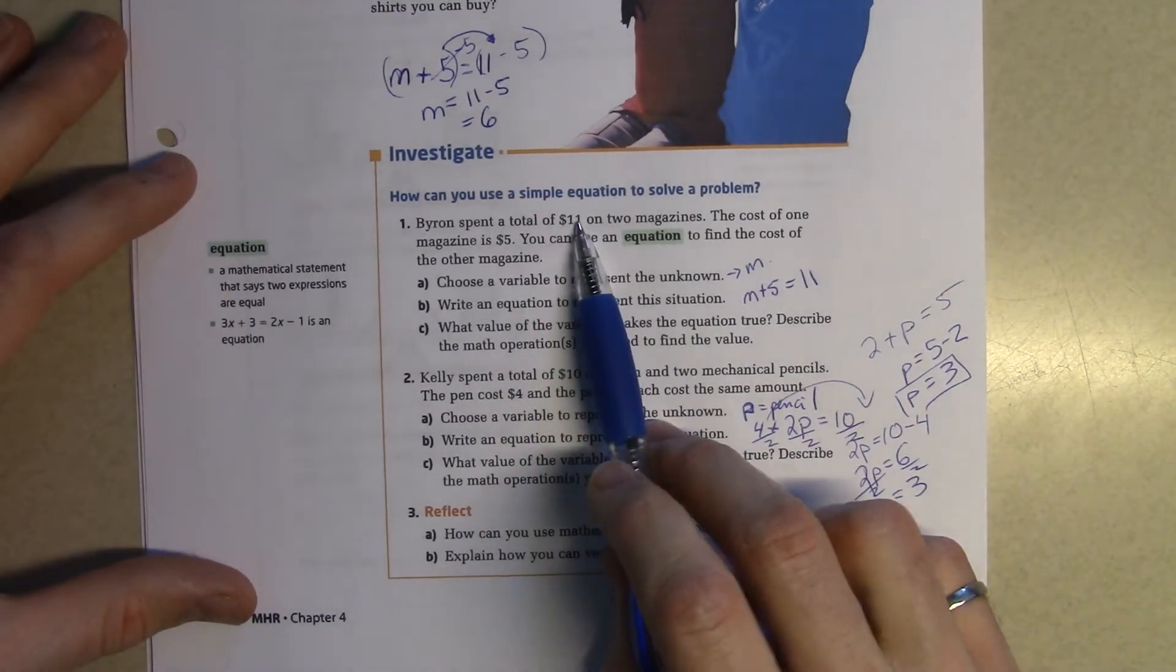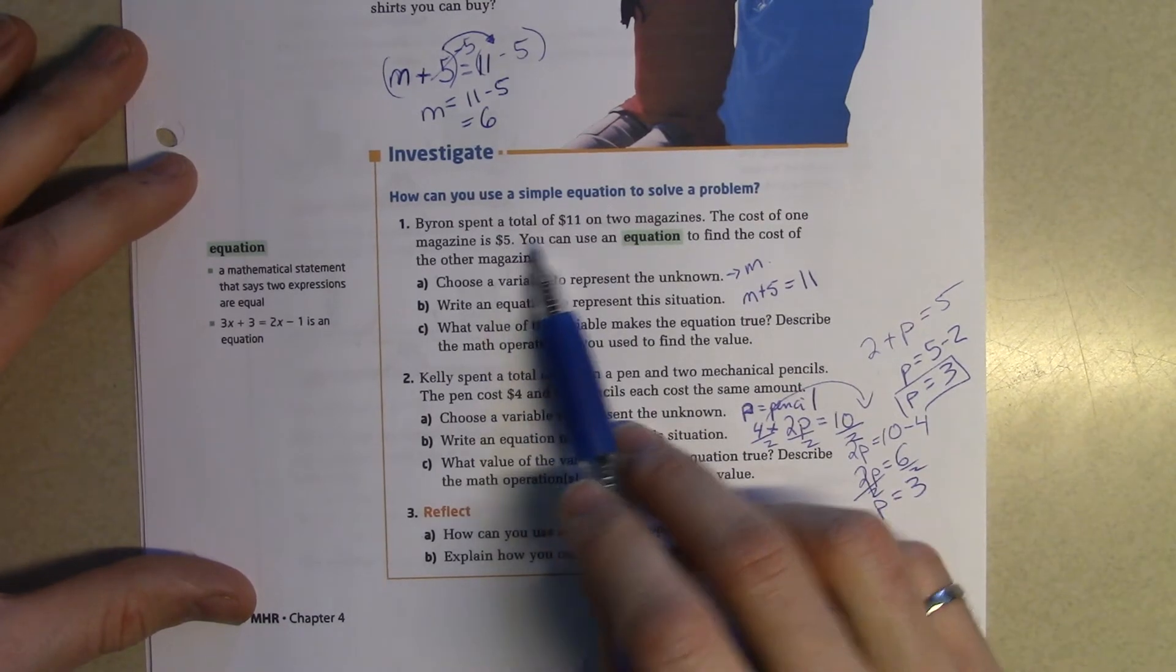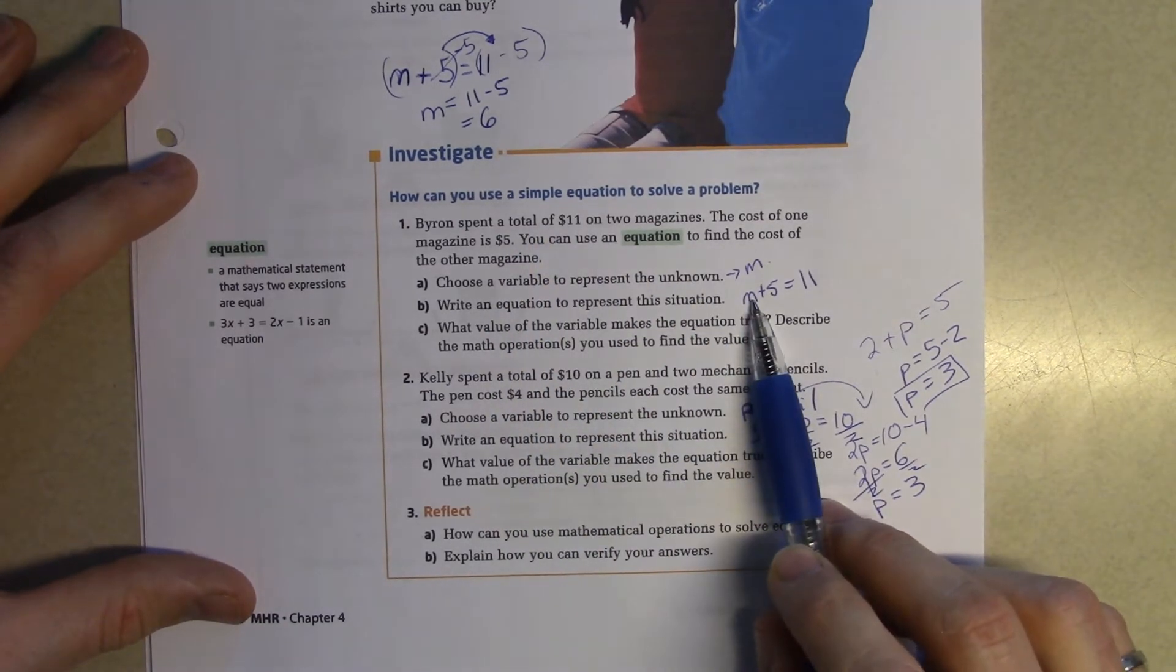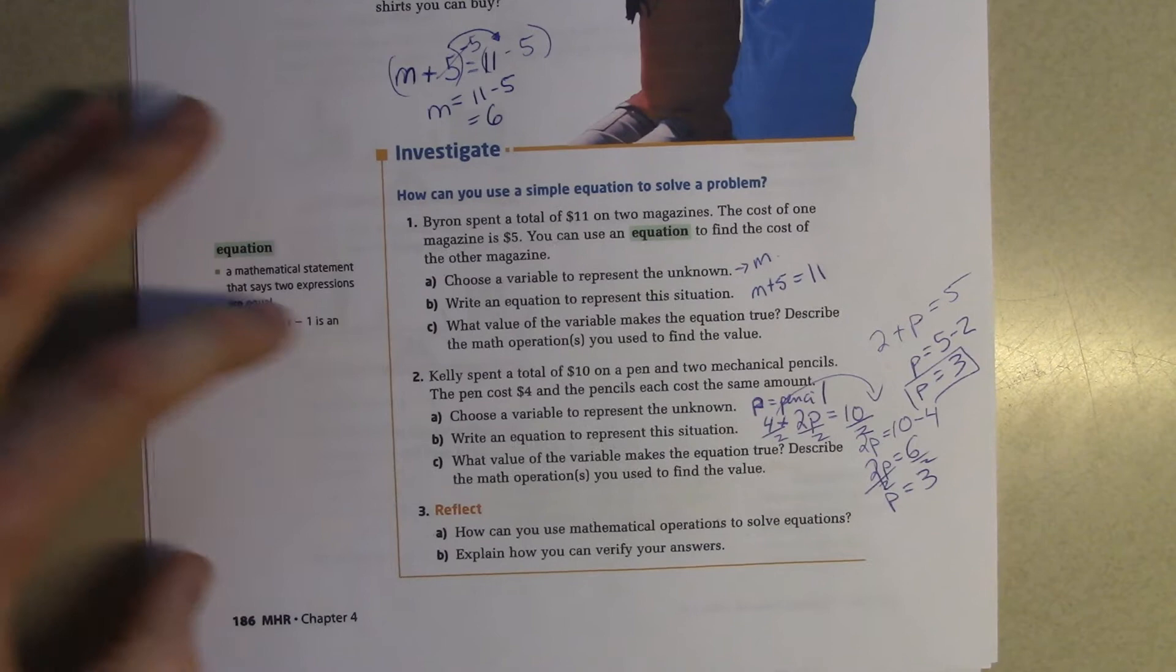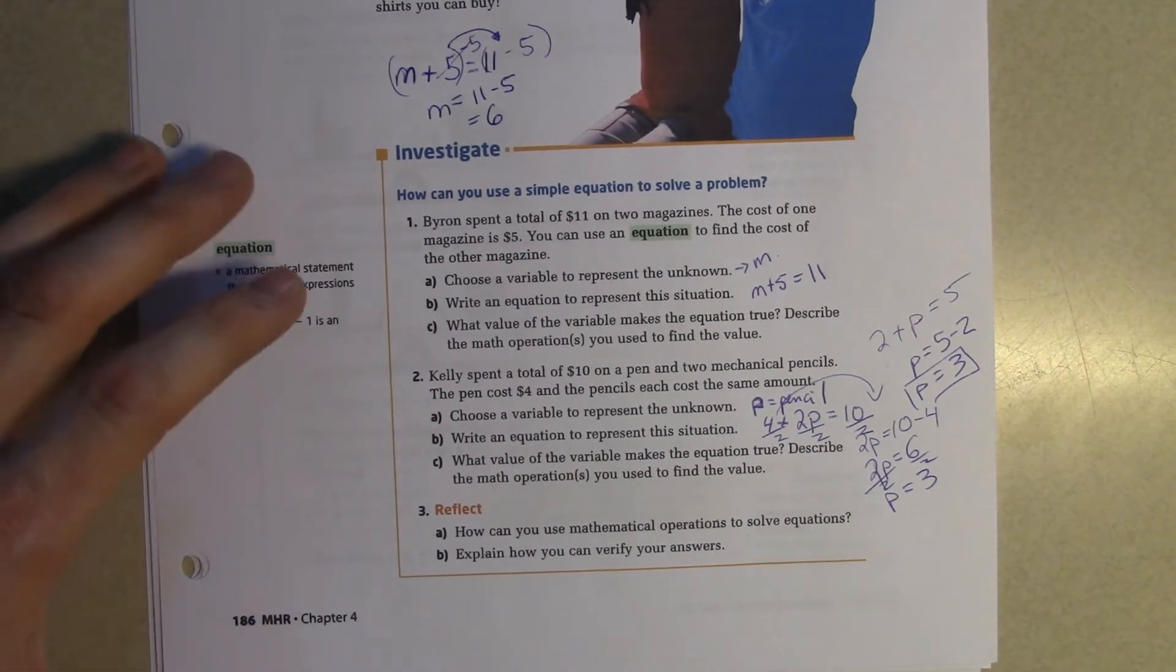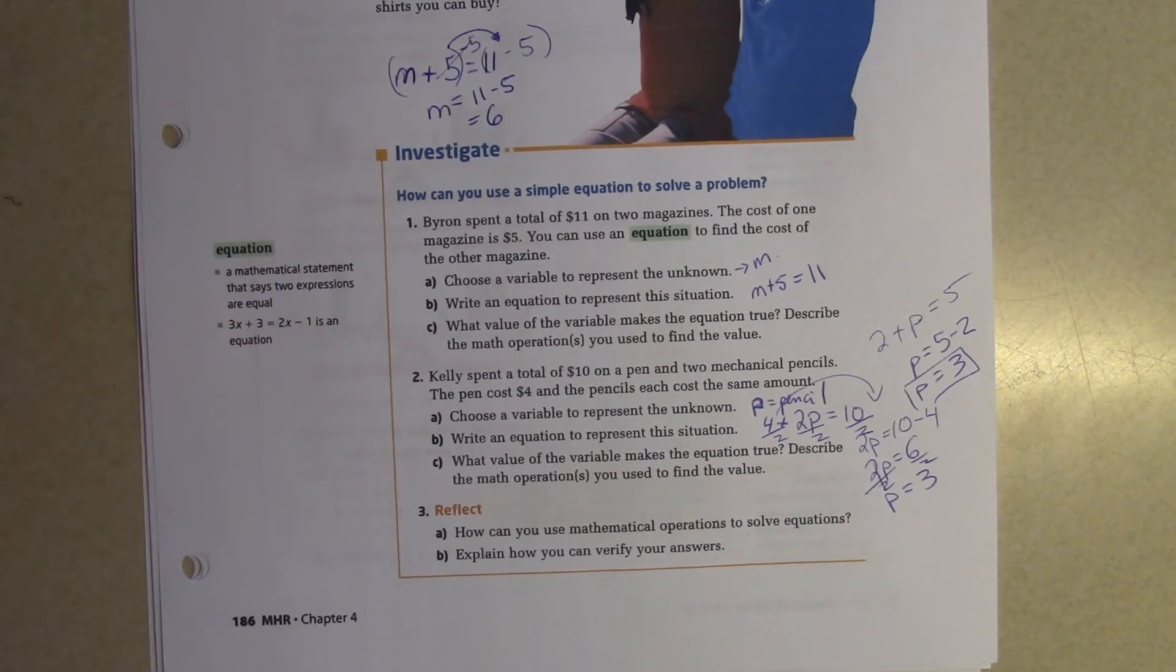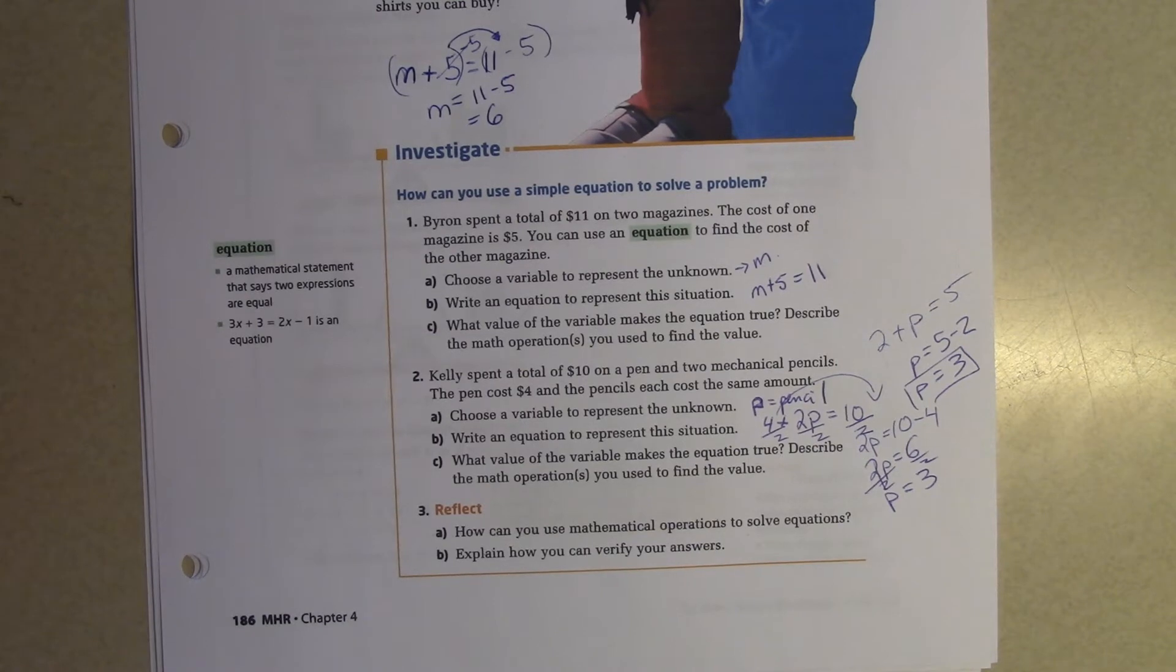If the first one here was $11 for two different magazines, if we plug in 6 for M, are we going to get 11? Yes. Finally, a definition: a mathematical statement that says two expressions are equal. That's an equation. An equation has the word or part of the word equal, so an equation should contain an equal sign.